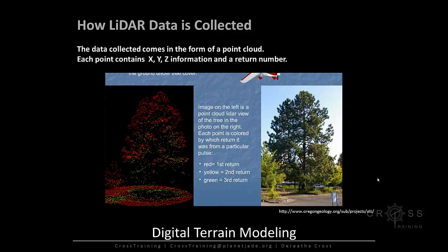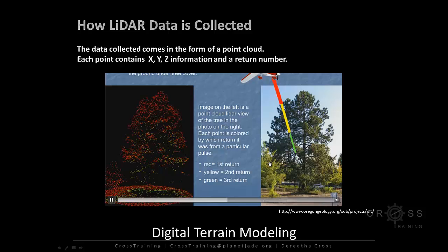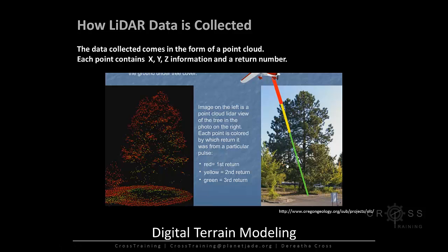The data collected comes in the form of a point cloud — a huge, massive collection of points. Each point contains XYZ information: where it's located in the XY plane and an elevation value as Z. It also has a return number. A first return is the first point the laser hits; the second return is the second point; and the third return is the last. Bare earth means all the points were processed and only the ground surface is shown — trees or buildings are processed out.